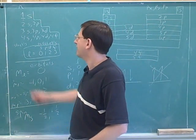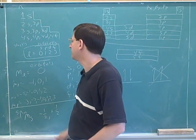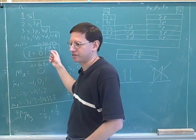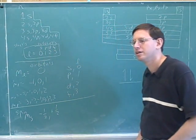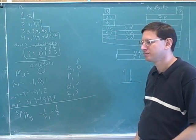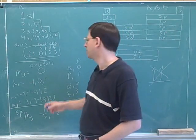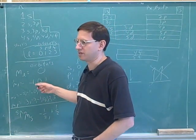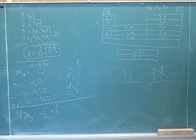The other numbers have to be integers. The n's have to be positive integers. The l's have to be non-negative integers. That includes zero. And the m sub l's could be negative zero or positive integers in the right range. But these are the two fractions, negative one-half and positive one-half.